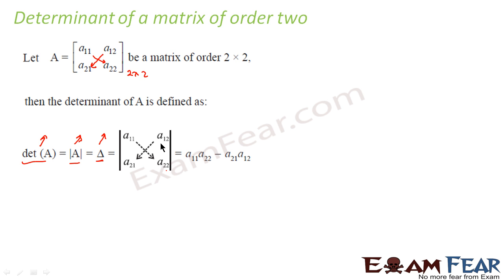Spend some time on this because it is fundamental. For a 2×2 matrix, to find the determinant you take the two diagonal numbers, multiply them, then subtract the product of the remaining two numbers. Very simple: diagonal numbers multiplied, minus the product of the off-diagonal numbers.